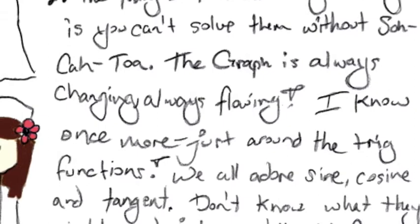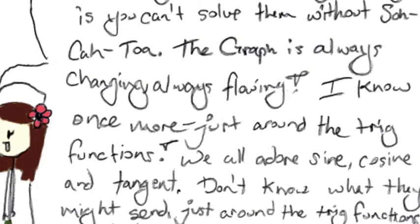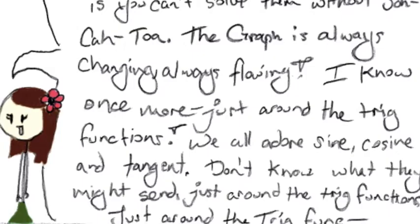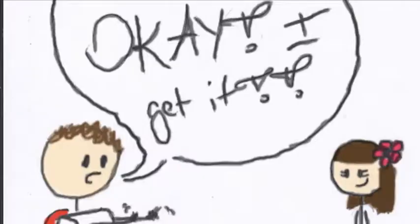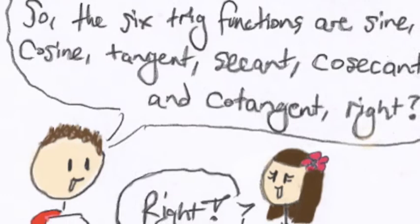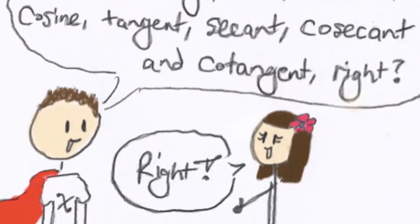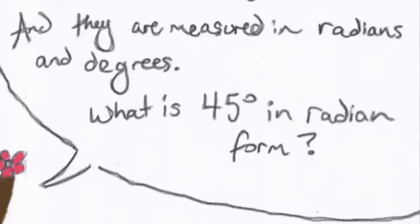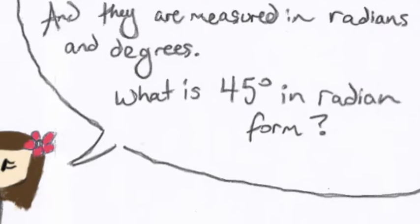Sine, cosine, and tangent, don't know what they might send. Just around the trig functions, just around the trig functions. Okay, I get it. So, the six trig functions are sine, cosine, tangent, secant, cosecant, and cotangent, right? Right! And they are measured in radians and degrees. What is 45 degrees in radian form? Um, pi-4s? Correct!